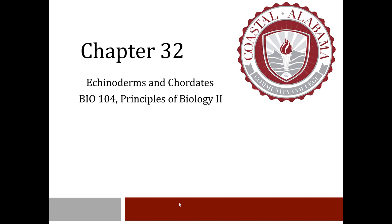In chapter 31 we discussed two major protostome branches of the animal kingdom. We'll now focus on a third major branch — the deuterostomes. Some biologists speculate that the last common ancestor of the deuterostomes was an animal that obtained food by filtering ocean water.